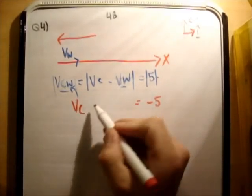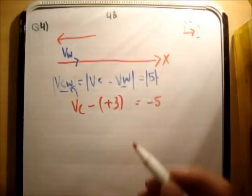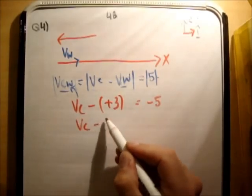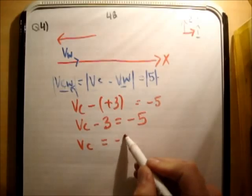So you get Vc minus... Now, the water's direction hasn't changed. It is still plus 3. So Vc minus 3 is equal to minus 5. Vc is equal to negative 2.